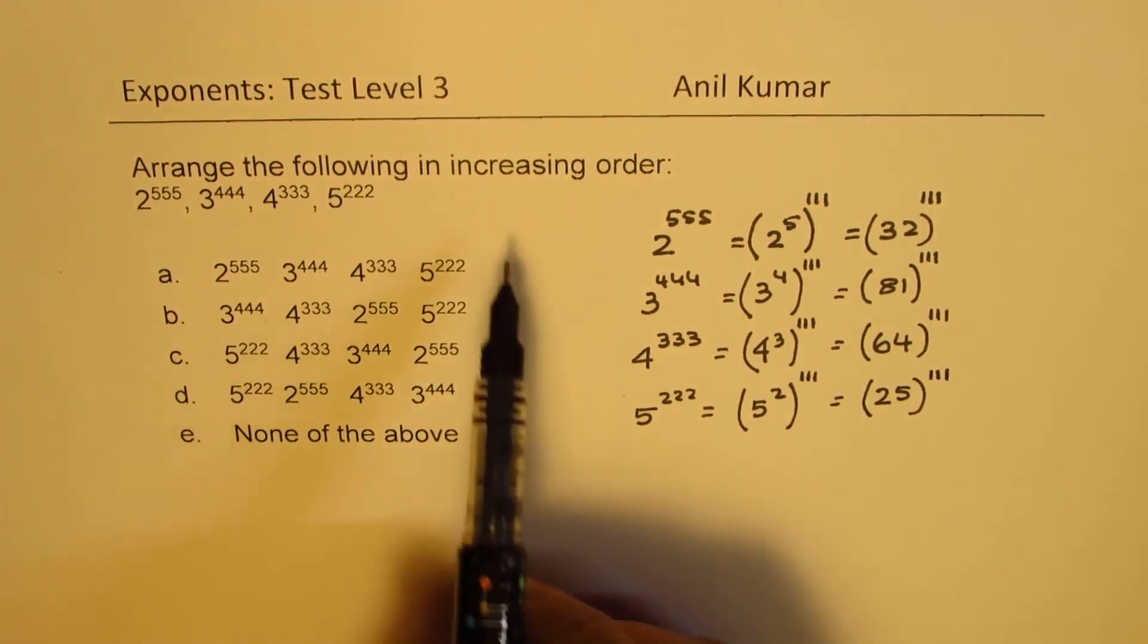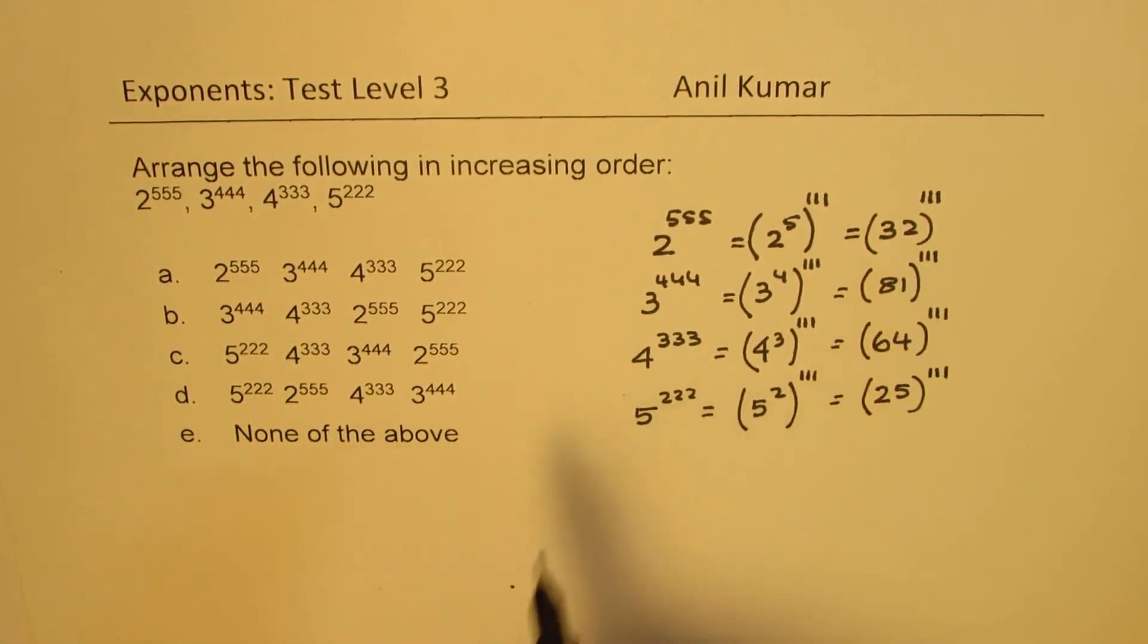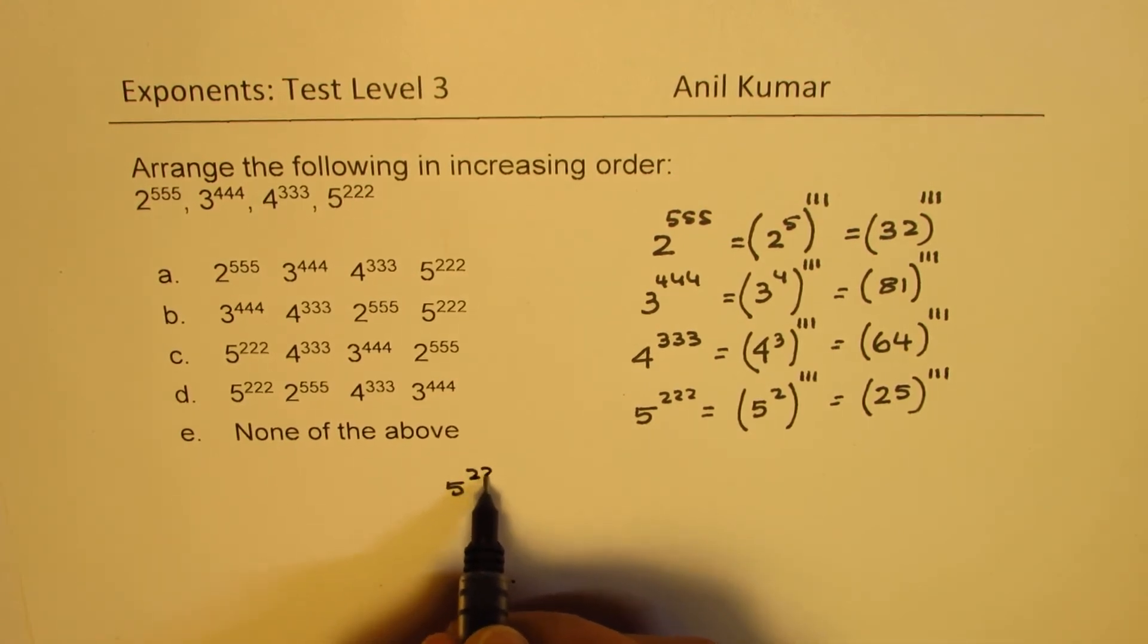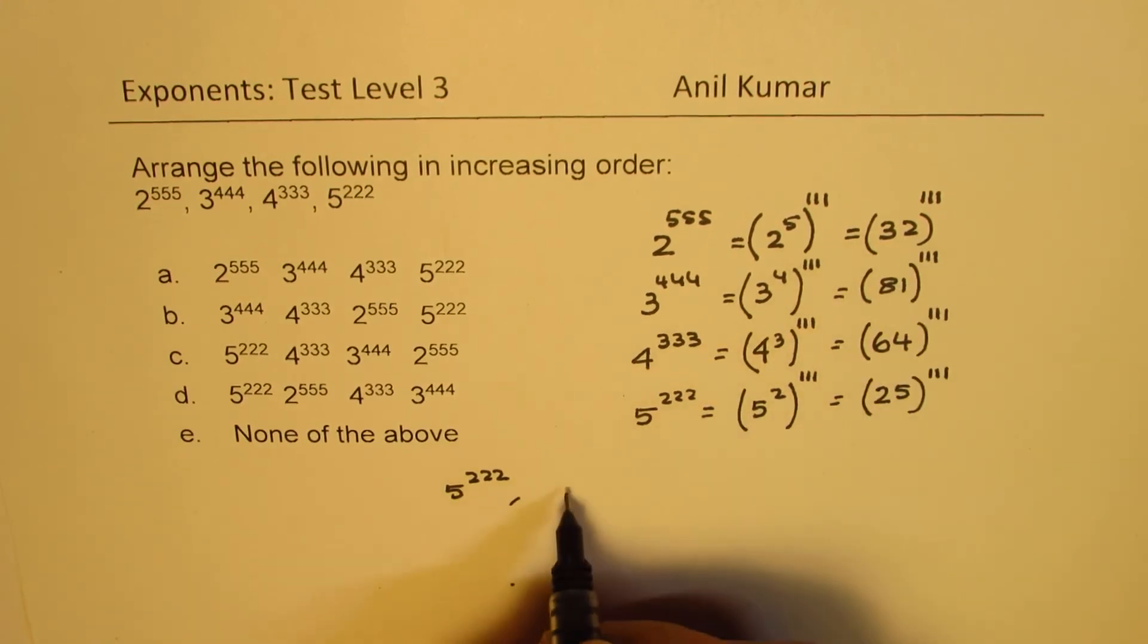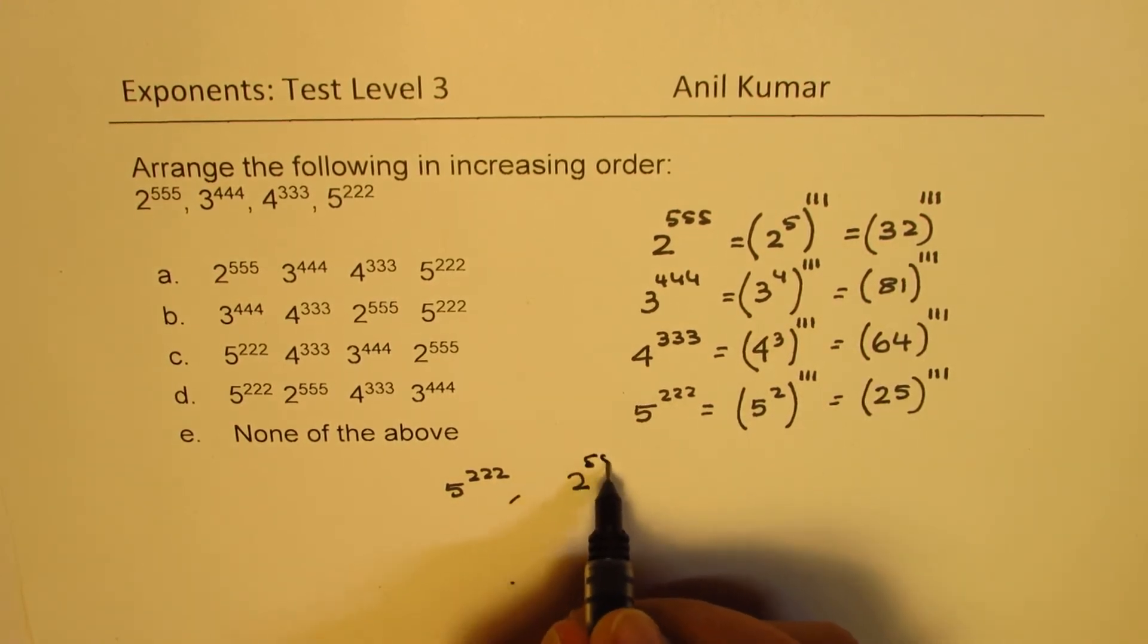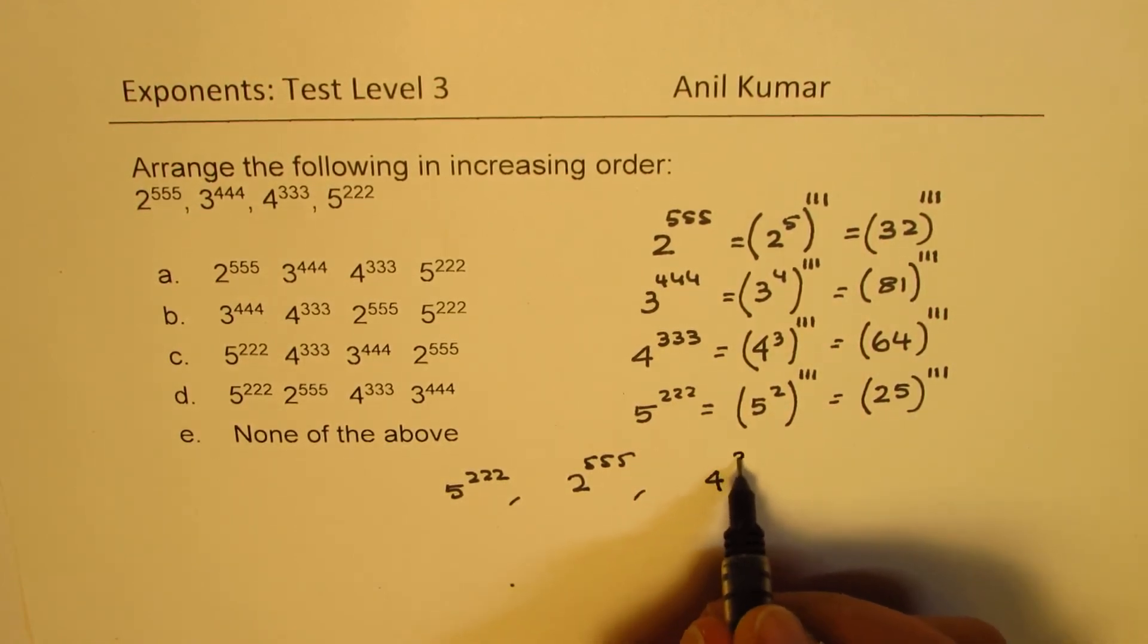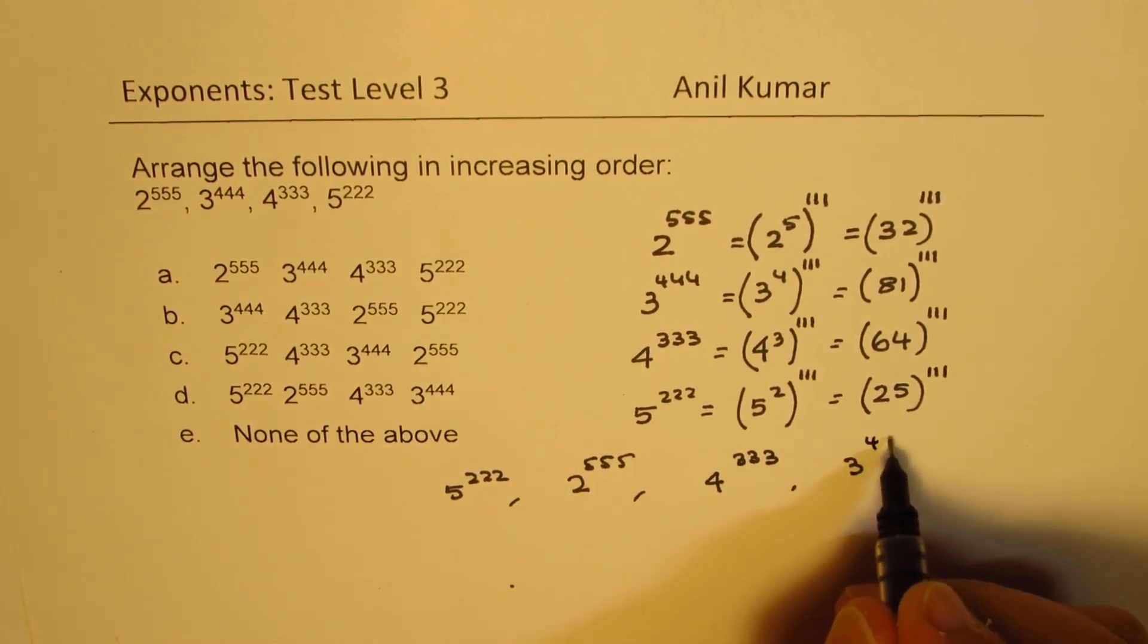Now, we have to arrange them in increasing order. So, the lowest number is definitely 5 to the power of triple 2, and after 25, it is 32. So, we get 2 to the power of triple 5, and then we have 64, which is 4 to the power of triple 3, and then we have 3 to the power of triple 4.